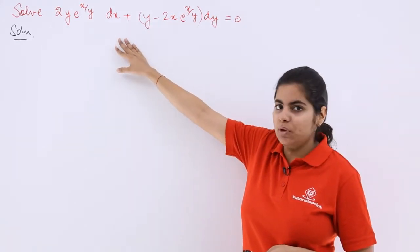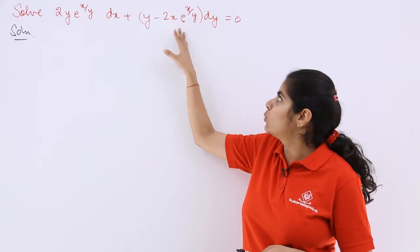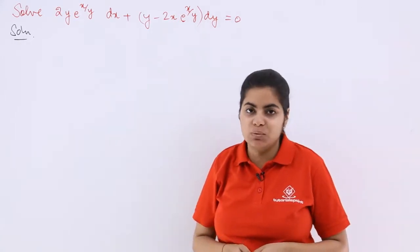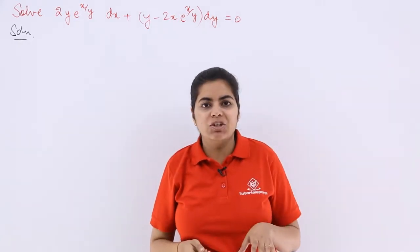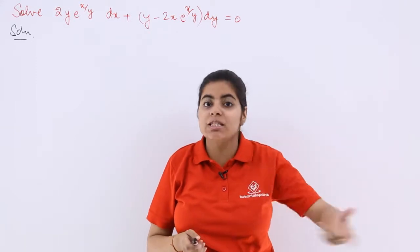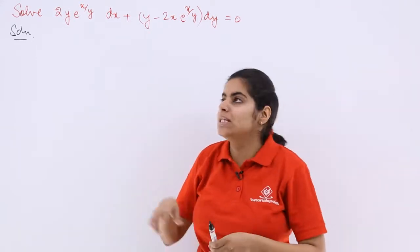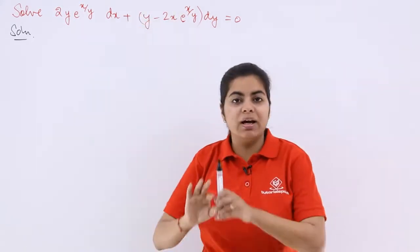It says solve 2y·e^(x/y)·dx + (y - 2x·e^(x/y))·dy = 0. Everywhere you see what is there? Not y upon x but e^(x/y). Means x upon y, x upon y everywhere.